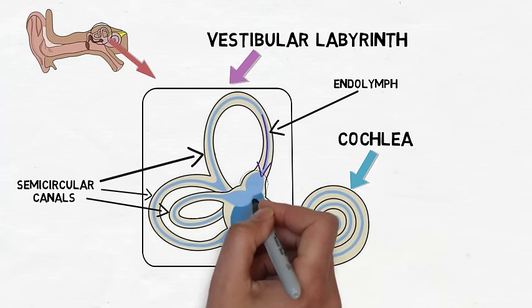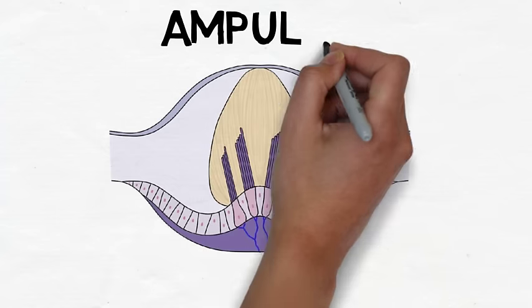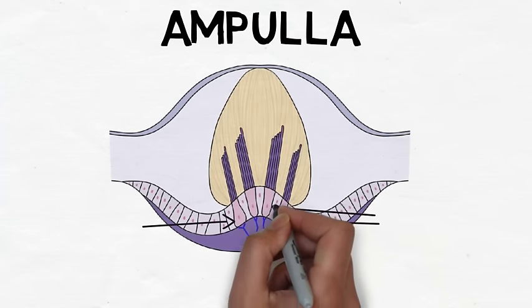The endolymph flows into an expansion of the canal called the ampulla, within which there are hair cells, the sensory receptors of the vestibular system.